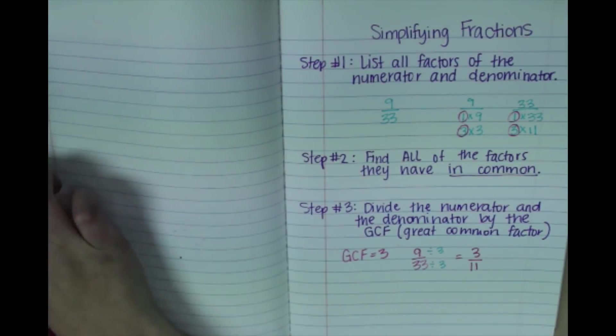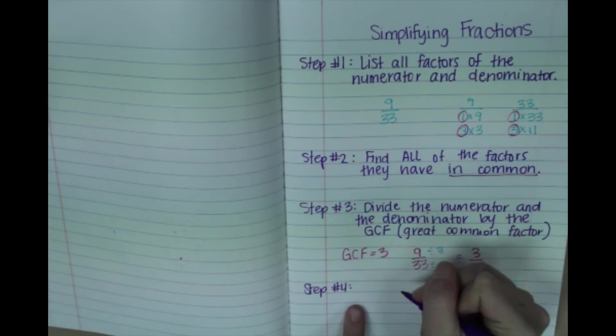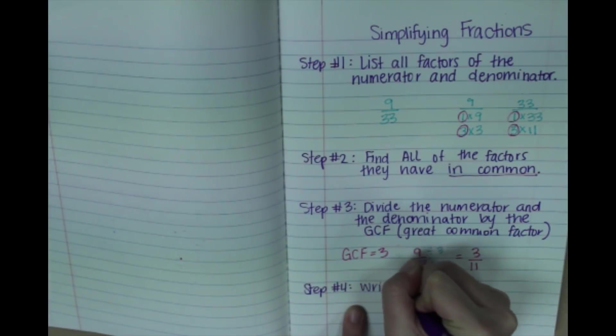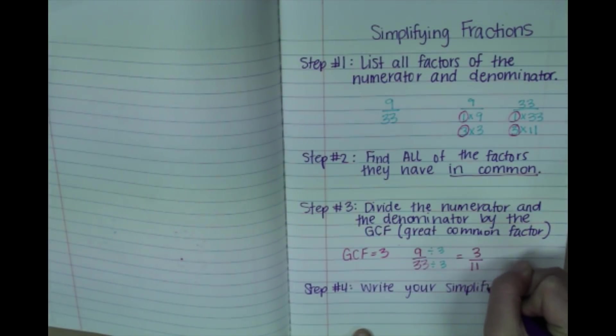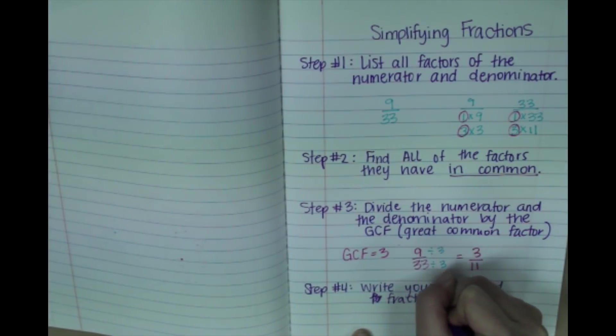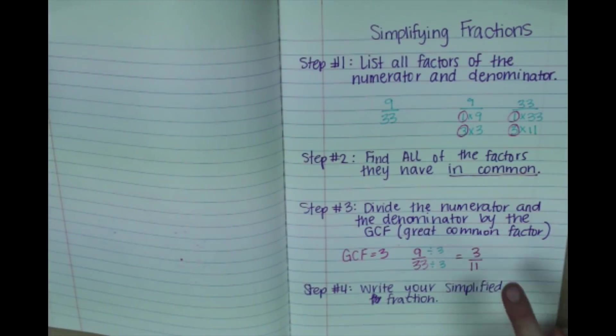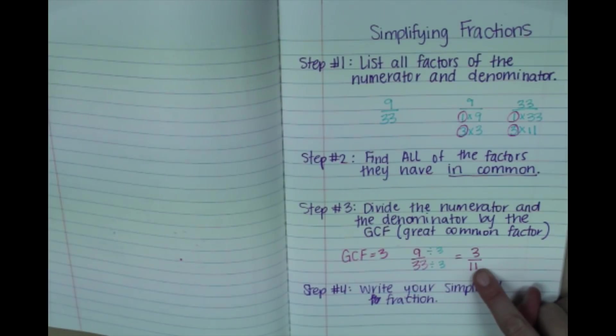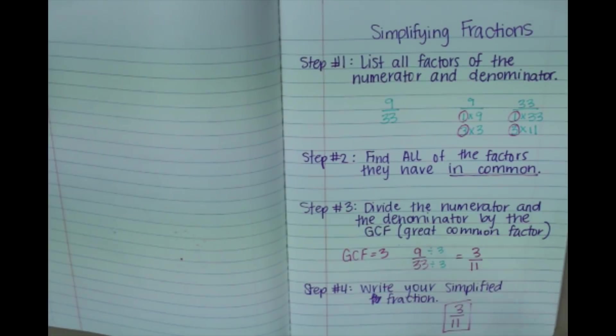And then step number 4 finally is to write your simplified fraction. If you divided by your GCF, you should have your simplest fraction. But you always want to make sure that it is fully simplified. There is nothing else that I can divide both 3 and 11 by except for the number 1, which wouldn't really get us anywhere. So our simplified fraction is going to be 3 over 11, which is my final answer.